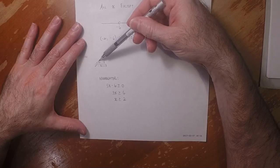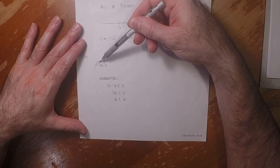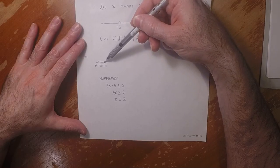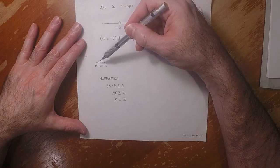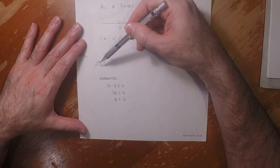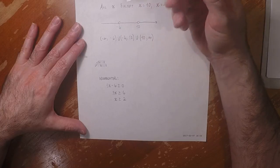So for example, we could plug in 5. That'd be fine because 3 times 5 is 15 minus 6 is 9, and the square root of 9 is a well-defined number. But we couldn't plug in 1 because 3 times 1 is 3 minus 6 would be negative 3.